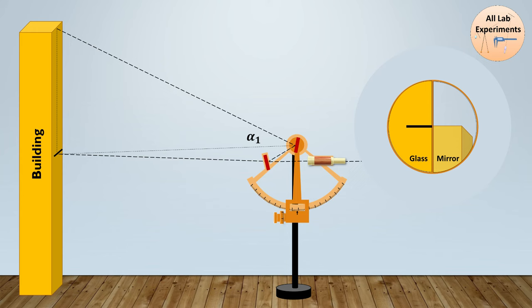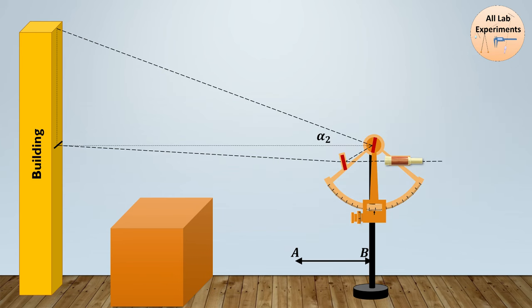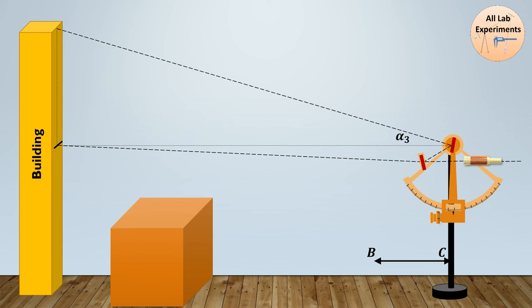Unfortunately we have some hurdle in between, so we can use a trick to calculate this. Let us consider this is at position A, then we can shift to position B and we can measure a new angle alpha 2. Similarly, shift this to position C where you can measure the third angle alpha 3.